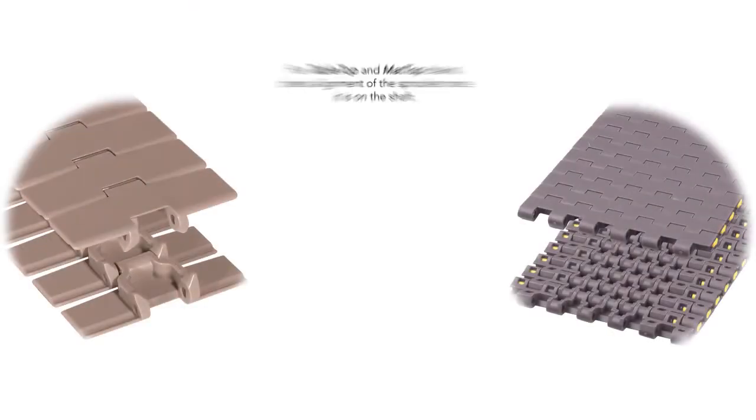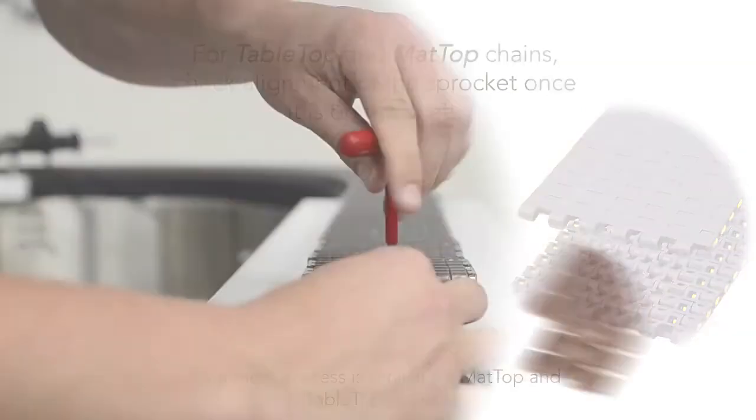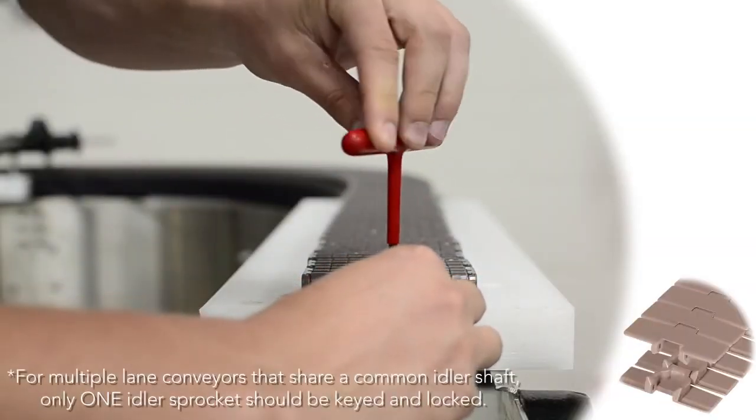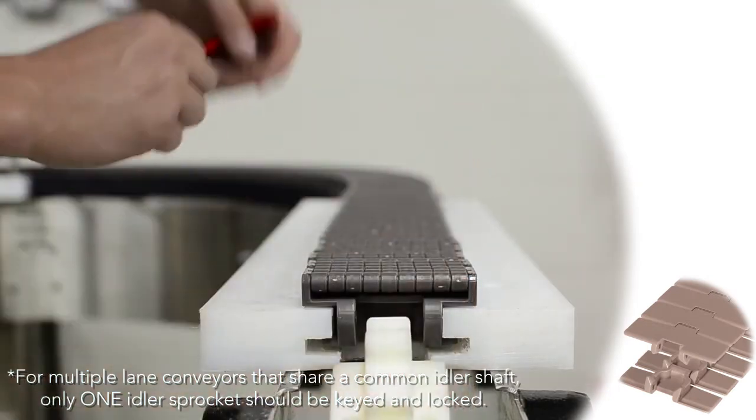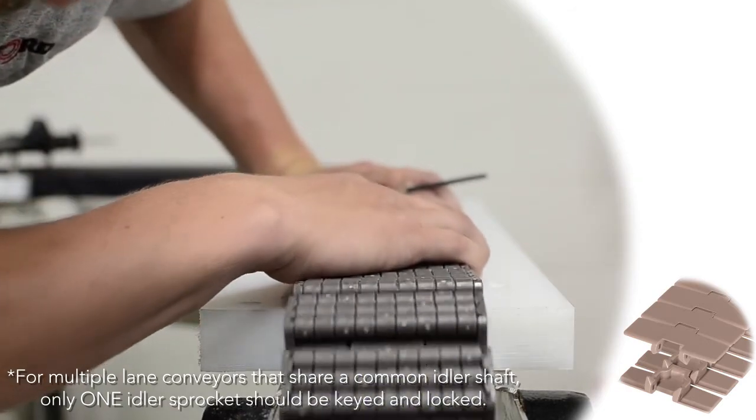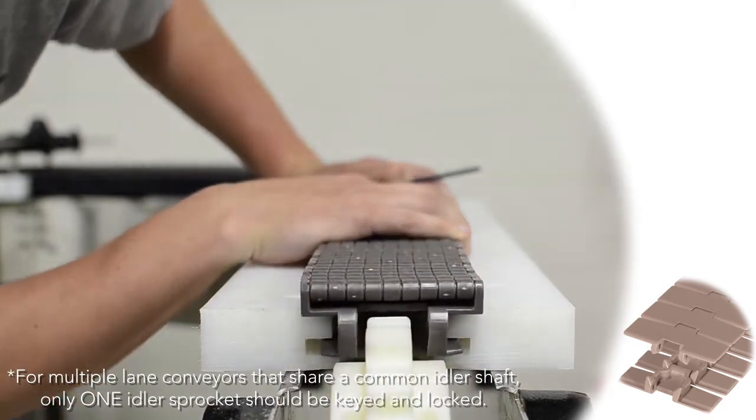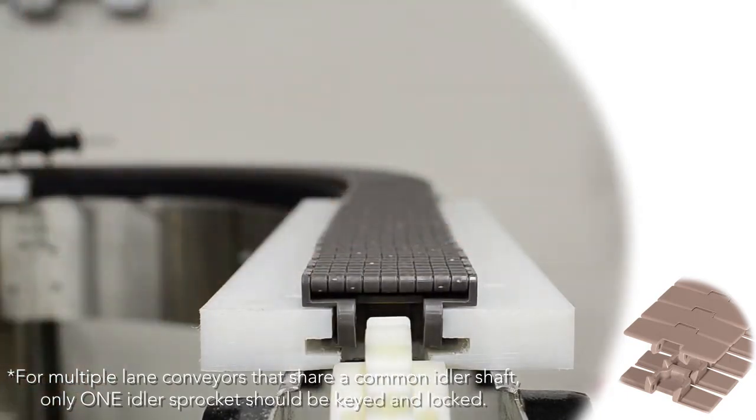Once your sprocket is on the shaft, it is important to check the alignment. Tabletop sprockets should be centered between the wear strip guide clearance. Afterwards, use a short section of chain to ensure proper alignment, feeling for a smooth transition without the chain catching or scraping on the wear strips or sprocket.